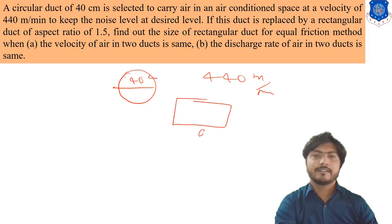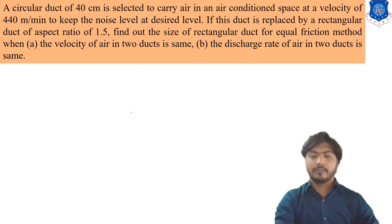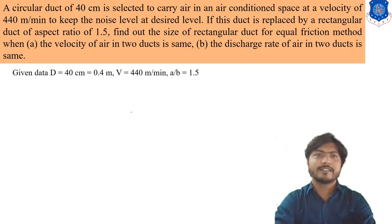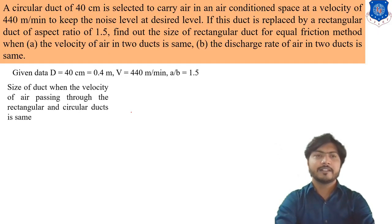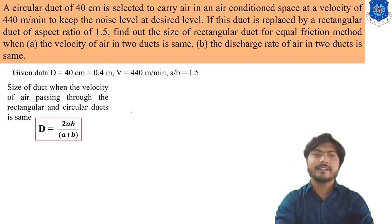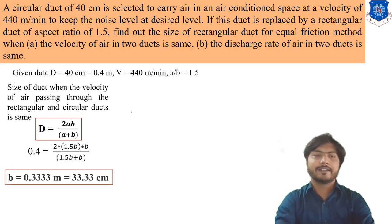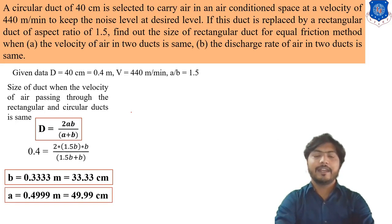Given data: aspect ratio A/B = 1.5, diameter D = 40 cm = 0.4 m, velocity = 440 m/min. For Case 1 — size of duct when velocity of air in both rectangular and circular ducts is the same — the formula is: D = 2AB / (A + B). Putting in all values, B = 0.333 m (33.33 cm) and A = 0.4999 m (49.99 cm).